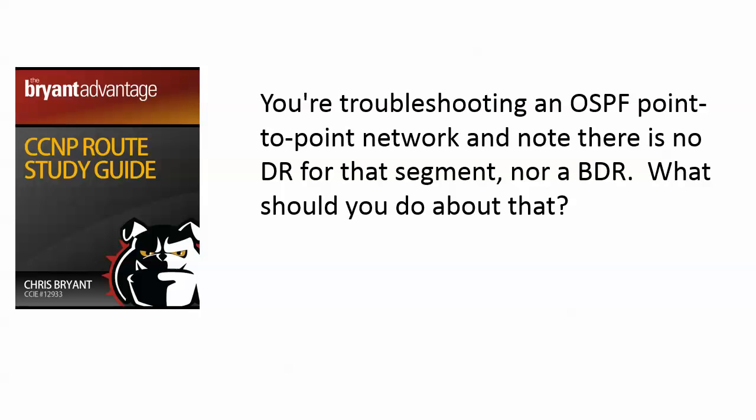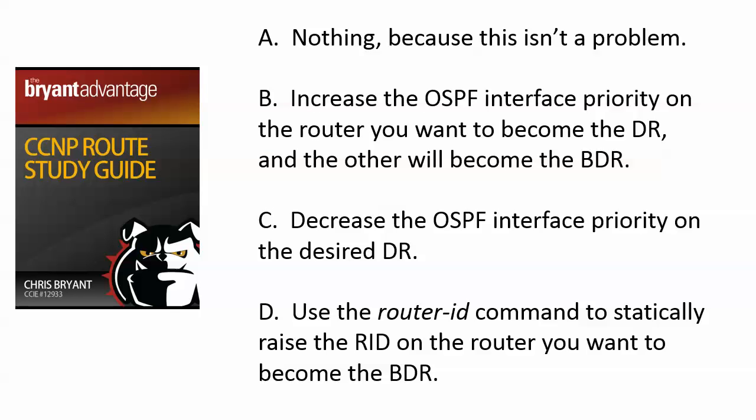You are troubleshooting an OSPF point-to-point network and you note while running your usual show commands that there's no DR for that segment and no BDR either. What should you do about this? Your choices are: A — nothing, because this isn't a problem. B — increase the OSPF interface priority on the router you want to become the DR, and the other will become the BDR. C — decrease the OSPF interface priority on the desired DR. Or D — use the router ID command to statically raise the RID on the router you want to become the BDR.